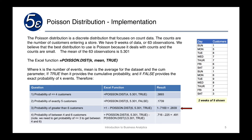For the probability of greater than six customers, we first find the Poisson distribution for six customers or less: POISSON.DIST(6, 5.301, TRUE). Since we want greater than six, we do one minus that result, which gives us 0.2839.